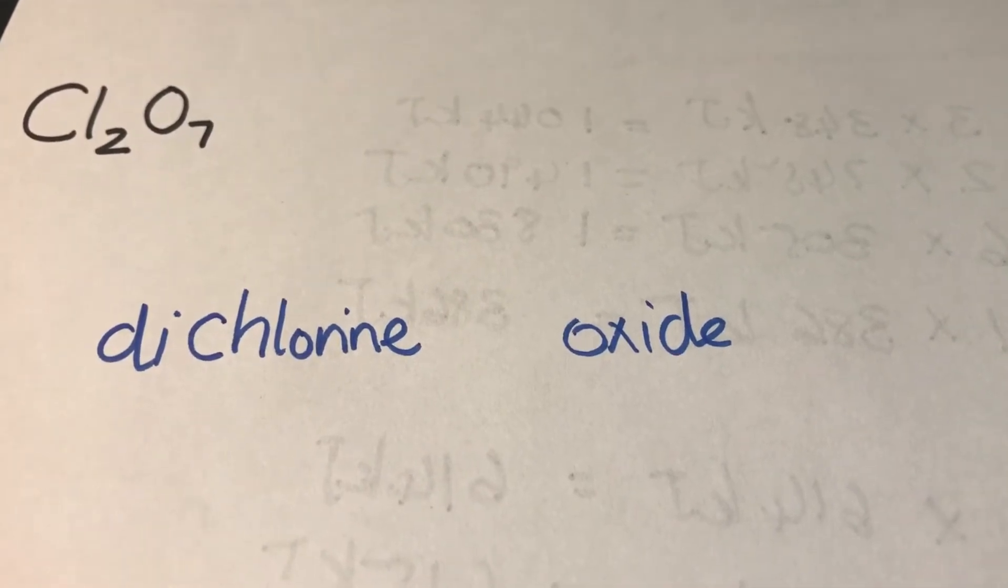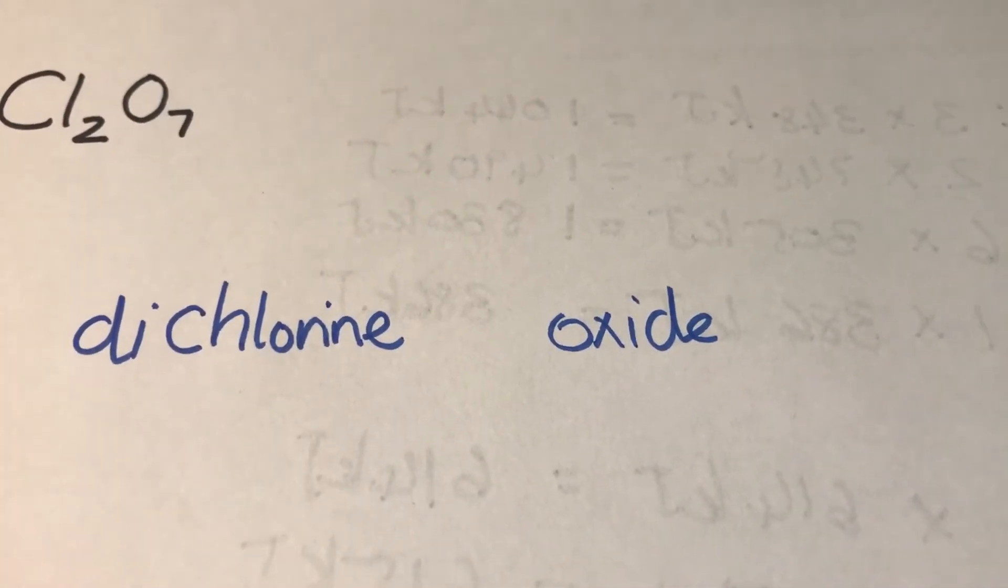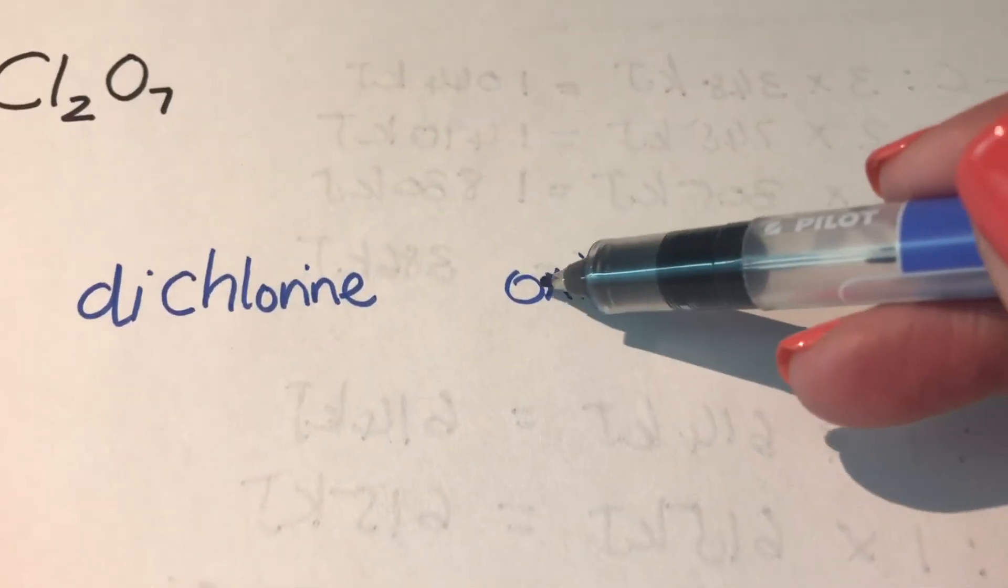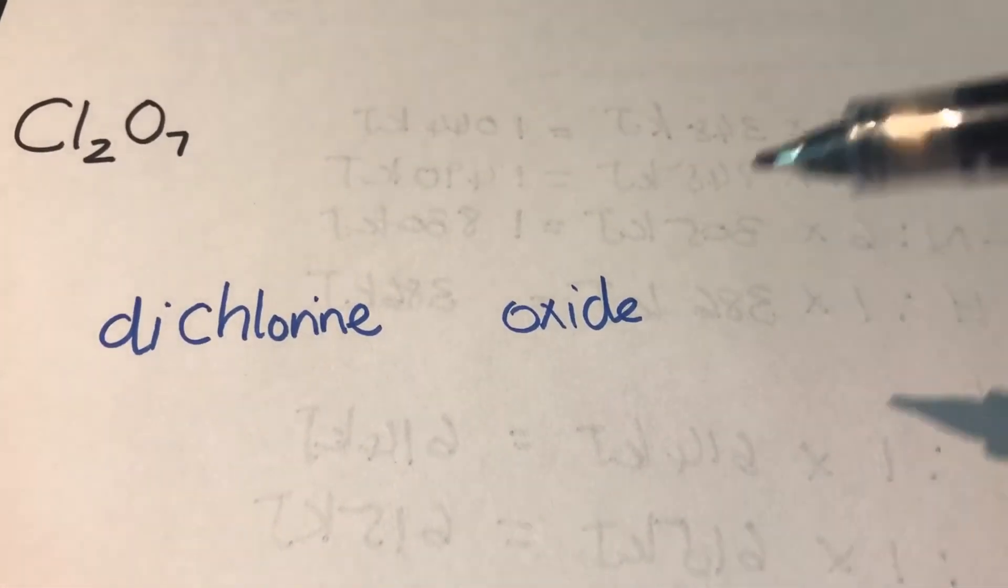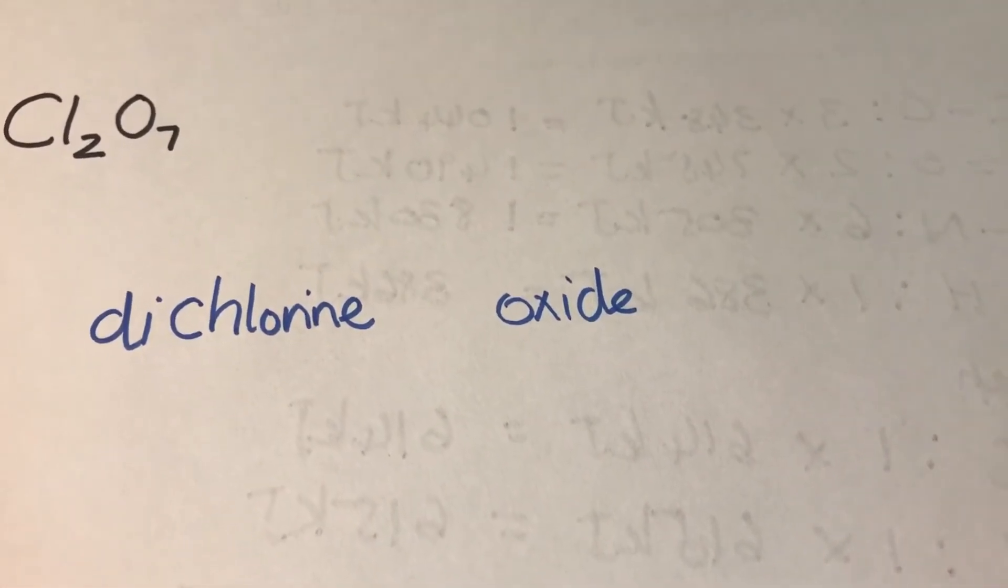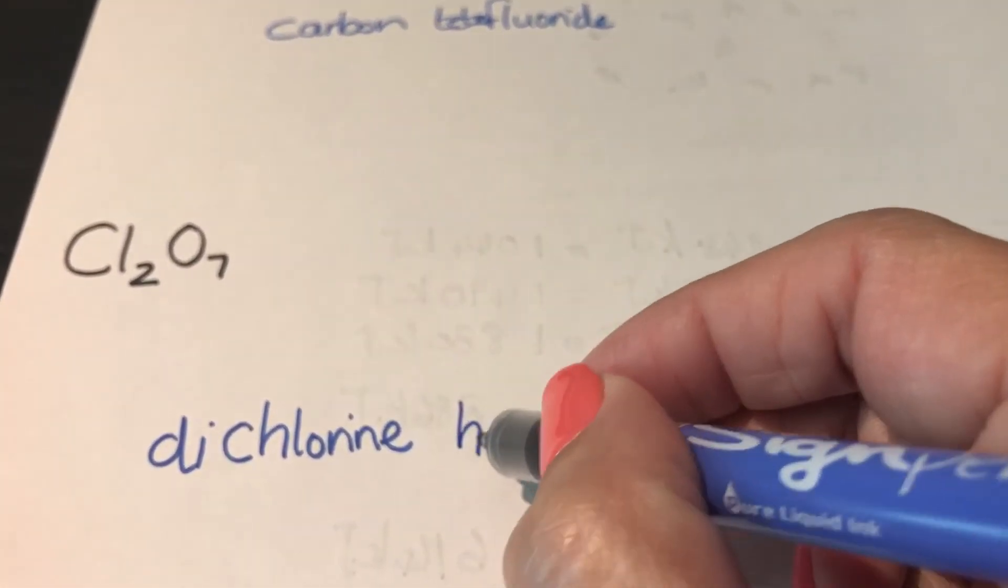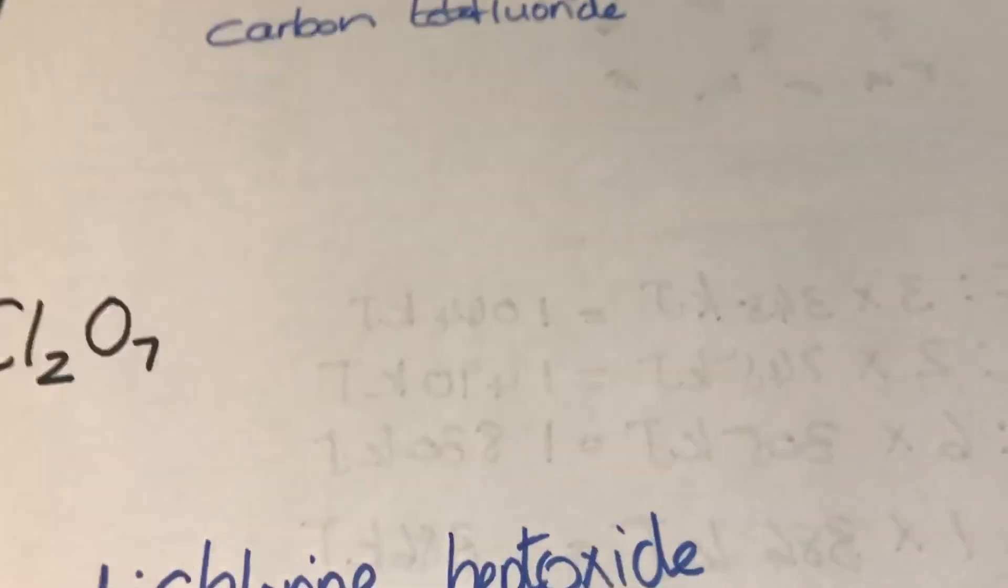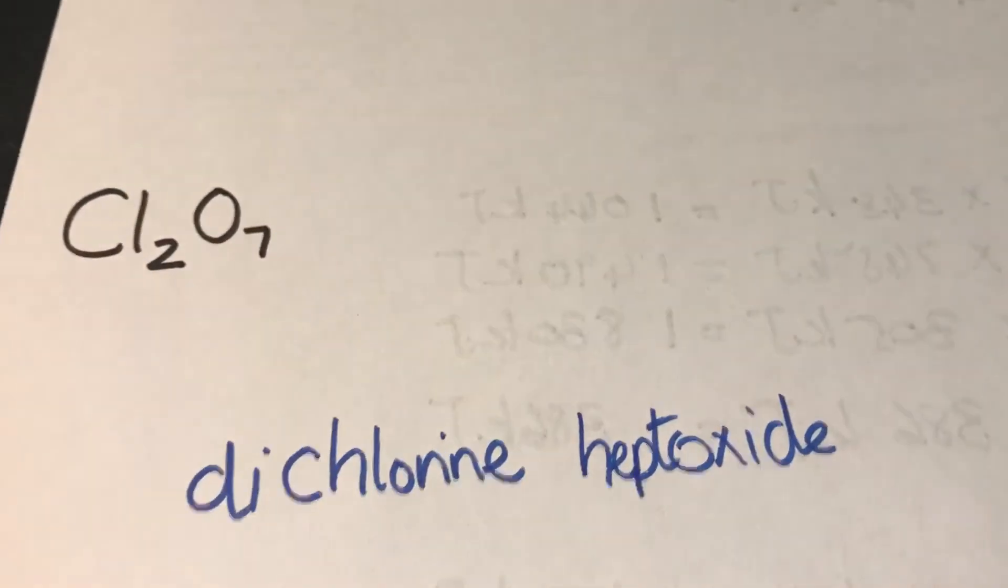But I don't say dichlorine hepta oxide. I lose the 'a' because if the next word starts with an 'o', or anything with a vowel, then I lose the 'a' because I can't have these two vowels, an 'a' and an 'o' next to each other. So it becomes heptoxide.